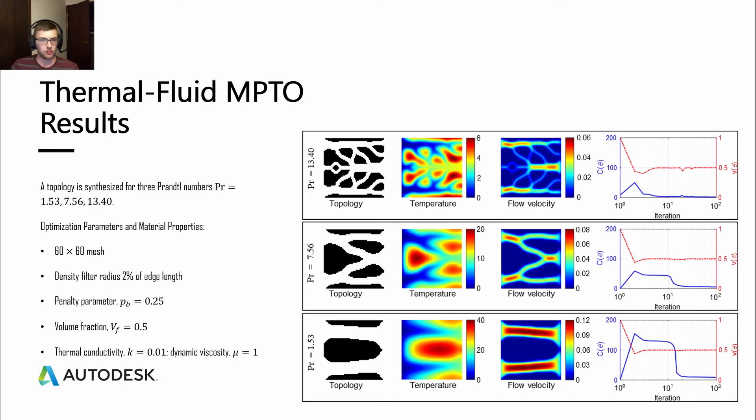At lower Prandtl numbers with lower heat capacity fluids, you don't have this ability. Since it's such a low heat capacity fluid, you need to have a faster flow rate. At lower Prandtl numbers, we have these bigger channels, higher flow rates. You can see that over here on the velocity as we decrease Prandtl number, we increase our velocity to find the optimal design. So there you can see how the method is working through a variety of different fluid parameters.